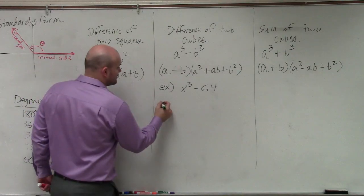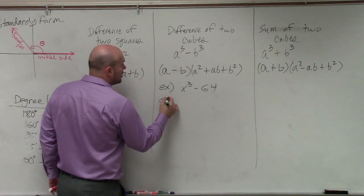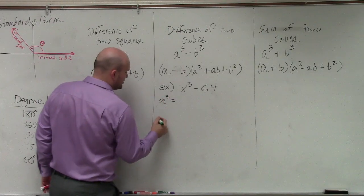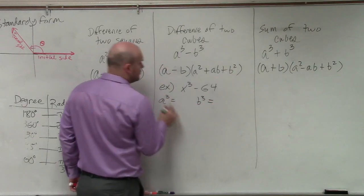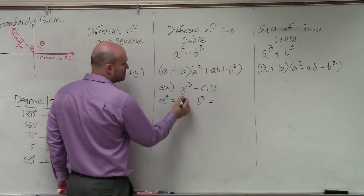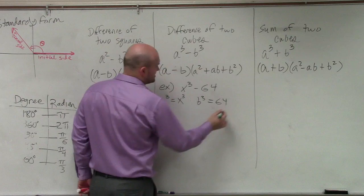So therefore, what we want to figure out is if we want to know what is a cubed equal to and what is b cubed equal to? Well, a cubed is equal to x cubed. b cubed is equal to 64.